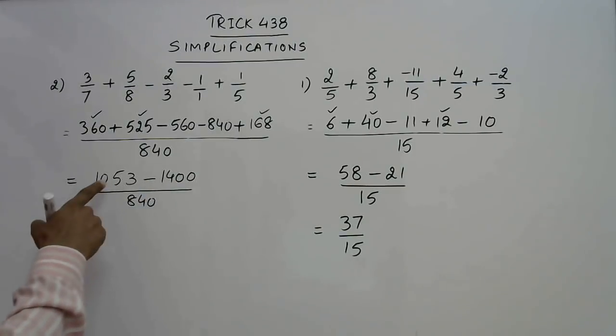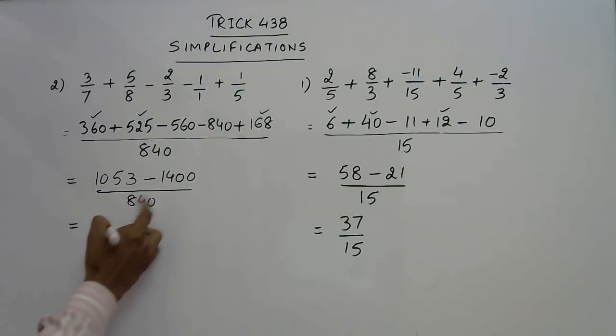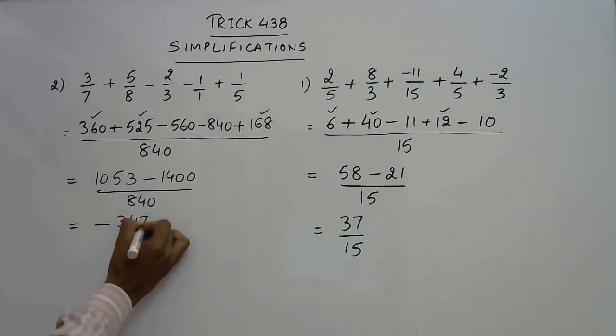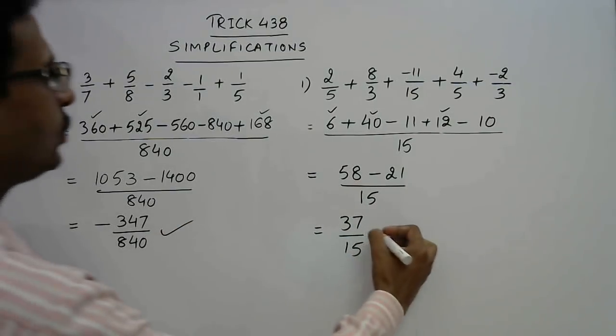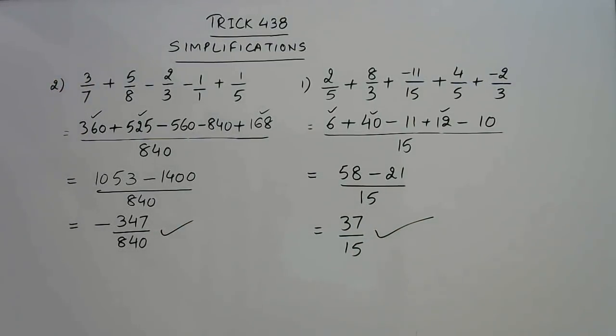So, 1400 minus 1053 obviously the answer will be negative and this will be 347 upon 840. Now, I can't see any common factor between these two numbers so I am leaving the answer as it is which should be the final answer which you have got on simplification.